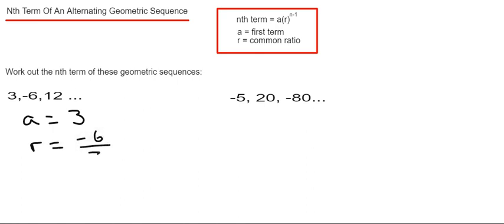Minus 6 divided by 3 gives us minus 2. So if we just put these two numbers into our formula in the box, that would be 3 times minus 2 to the power of n minus 1. It's important that you put the bracket in as well.